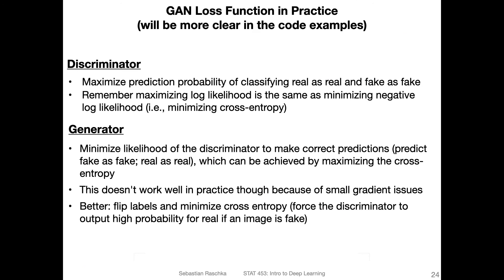By now we've seen a lot of gradient ascent and descent and flipping between the two. In practice, it's not as complicated as it might look — it's actually pretty straightforward to implement the GAN loss with regular gradient descent. We will use regular gradient descent for both the discriminator and the generator, and it will be clearer when you see it implemented in code in the next video.